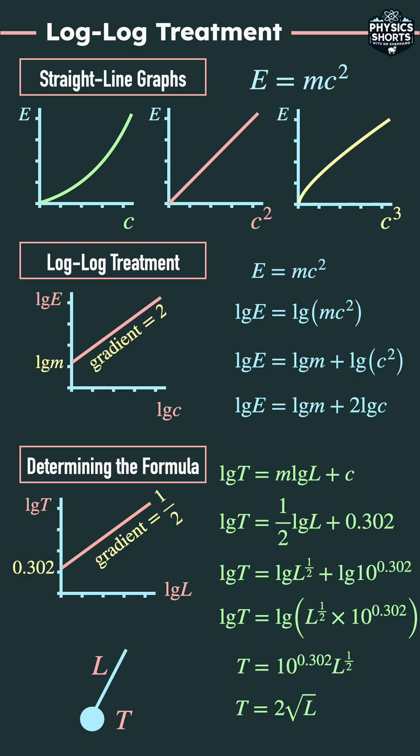Now the actual equation is T equals 2 pi root L over G, which looks different, but G is constant. So T equals 2 pi over root G times root L. And if you've worked that out, 2 pi over root G is equal to 2. So T equals 2 root L. In other words, we just determined the formula using a log-log treatment.